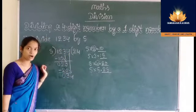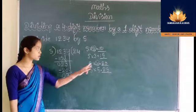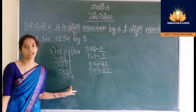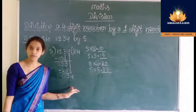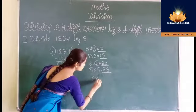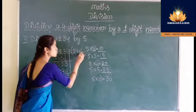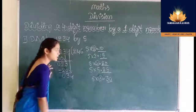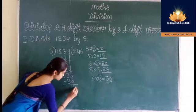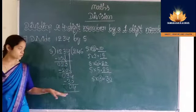Now tell me the table of 5: 5 ones are 5, 5 twos are 10, 5 threes are 15, 5 fours are 20, 5 fives are 25, 5 sixes are 30, 5 sevens are 35. 25 is greater than 34 — that is why we consider 5 sixes are 30. Write 6 in place of quotient. Then write the product 30 below 34. 4 minus 0 is 4, 3 minus 3 is 0. So we get 4 as a remainder.